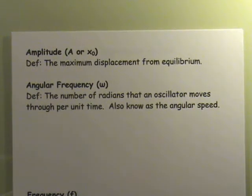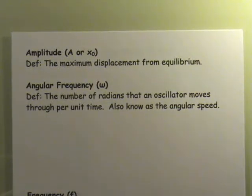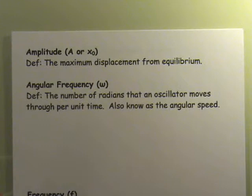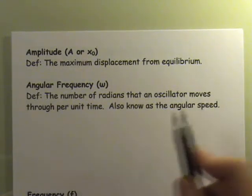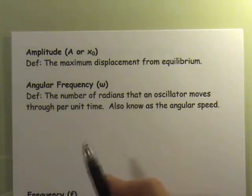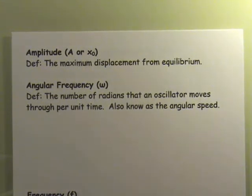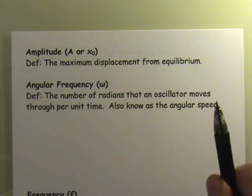Now we'll look at some of the other important properties of simple harmonic oscillators. One of the important ones is a property called the amplitude. All oscillators have a number of different displacements — they go back and forth around some fixed position, so there's really an infinite number of displacements. But there is one particular displacement that is very important: the one where they reach their maximum displacement.